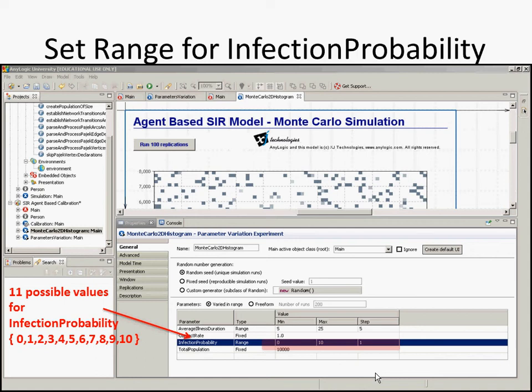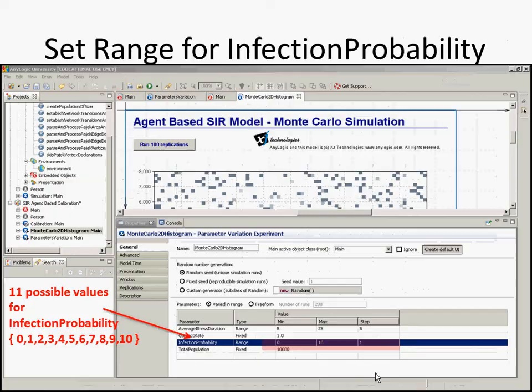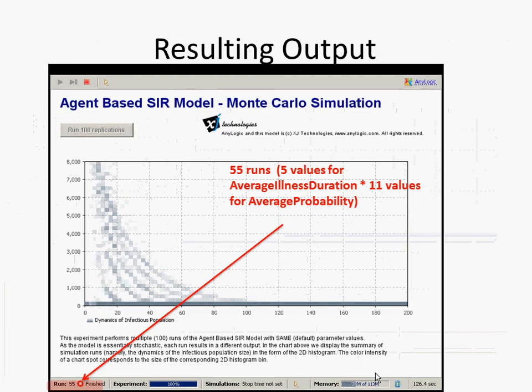In multi-way sensitivity analyses, we might be examining all possible combinations of values. For example, this one goes from 5 to 25, step 5; this other one goes from 0 to 10, step 1. In this case, we'll have all possible combinations of these values examined. So there are 11 possible values for one parameter and 5 possible values for the other, and we'll get 55 runs total.